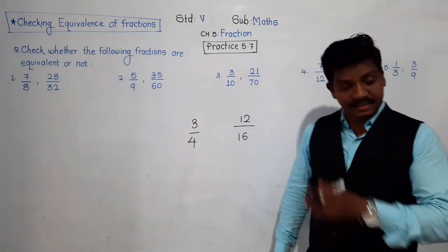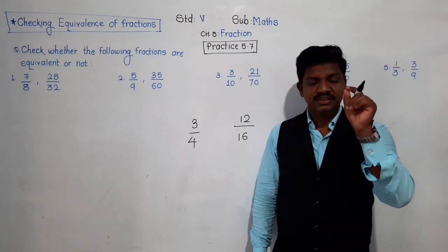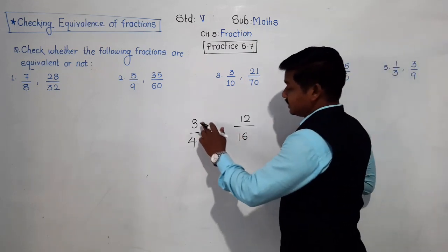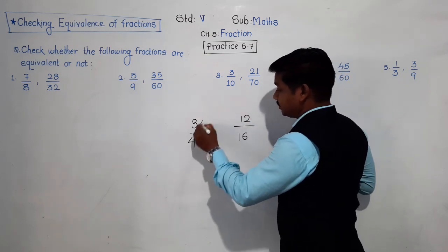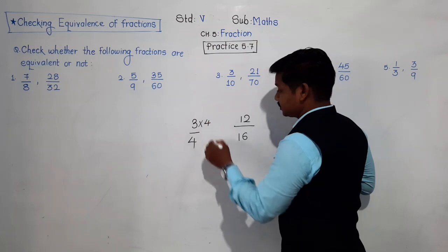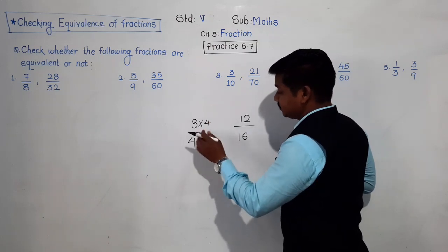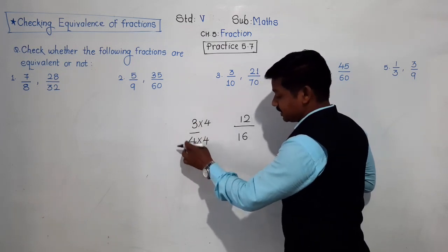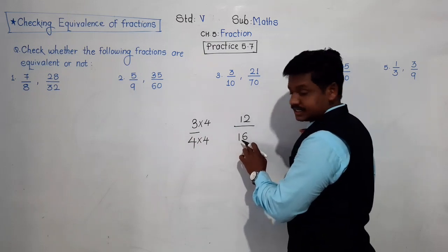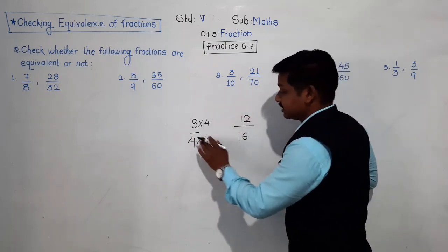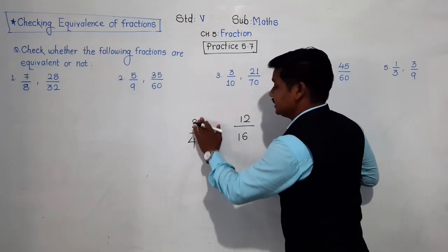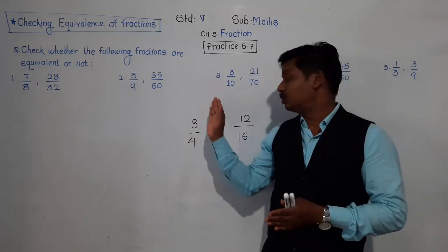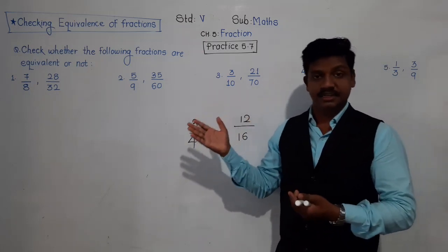There is one very easy trick to check. You can see that 12 comes from multiplying 3 by 4, and 16 comes from multiplying 4 by 4 — so they are equivalent. But this approach works only for small numbers. If there are bigger numbers, this method is not applicable.